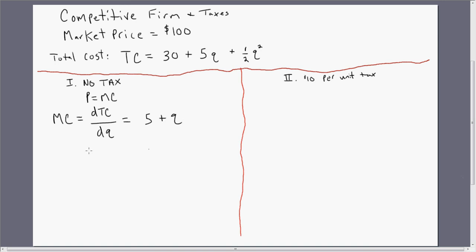So setting price, $100, equal to marginal cost. This competitive firm would produce 95 units of output.